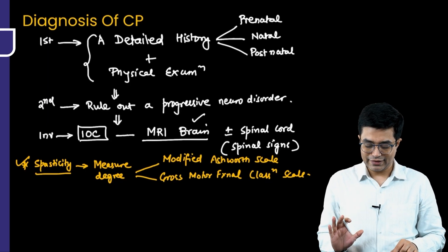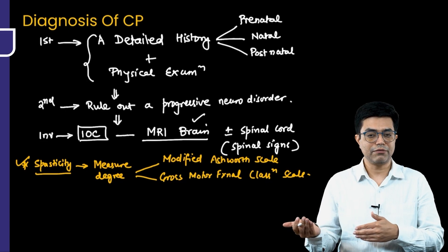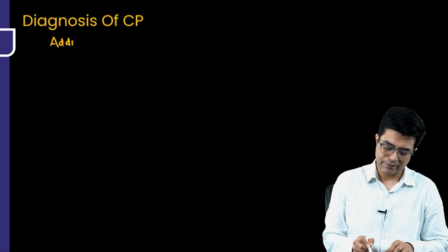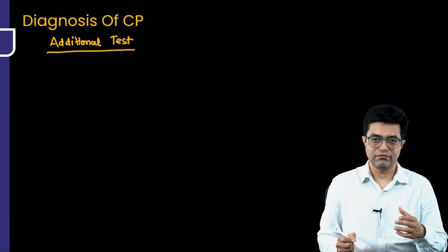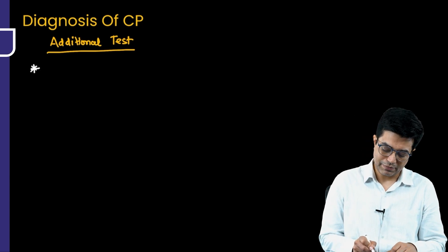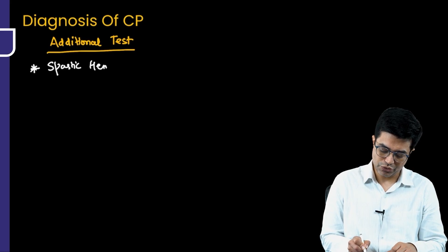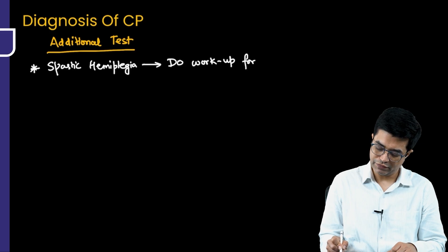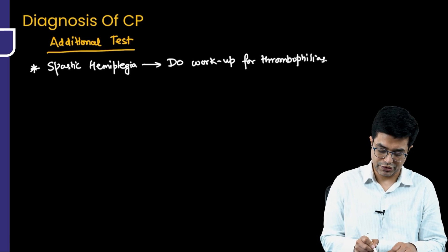Apart from history, examination, ruling out progressive disorders, and MRI, you should also perform additional investigations. These additional tests in cerebral palsy are individualized according to the patient and the clinical findings. For example, a patient with spastic hemiplegia — along with the usual investigations and MRI — should also undergo a workup for thrombophilias, which are a risk factor for causing stroke. You also need to do a vision assessment in the child.